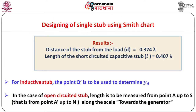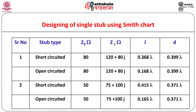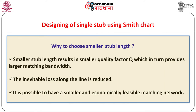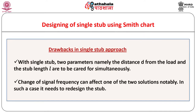Thus finally, we have the required values as shown. Single stub matching technique gives two solutions for the stub length. Out of these two, the solution giving smaller stub length is preferred over the other, because it results in smaller quality factor Q which in turn provides larger matching bandwidth — meaning the same stub arrangement can be used over a larger frequency range. Due to smaller stub length, the inevitable loss along the transmission line is also reduced, and it is possible to have a smaller and economically feasible matching network.